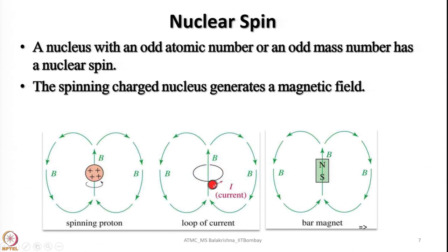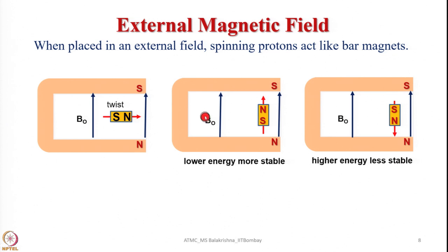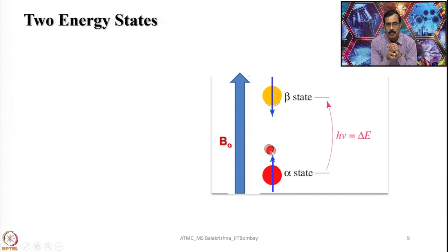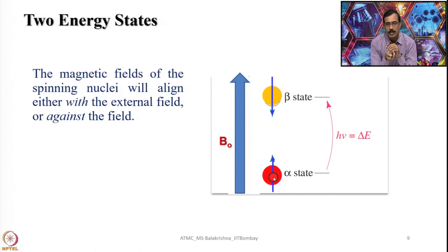A loop of current is generated. When placed in a magnetic field, spinning protons act like bar magnets. Some can be aligned with the field — lower energy, more stable — and some aligned against the field — higher energy, less stable. You can convert from the lower energy state to the higher energy state (alpha to beta) by supplying energy equivalent to the energy gap between these two levels, given by ΔE = hν.